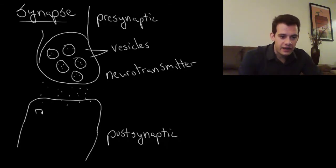And then on the other side, on the dendrite, we have receptors for the neurotransmitter.